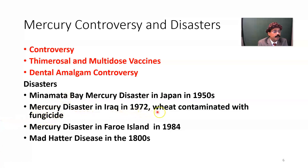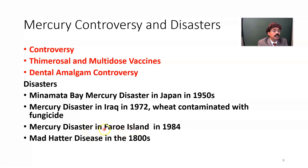Mercury disaster was also found in the Faroe Islands in the North Atlantic, where people used to eat whale meat and developed manifestations of mercury poisoning. The Mad Hatter disease, documented around 1980, involved neuropsychiatric problems in people who used to work in the hat-making industry in close quarters. They came in contact with mercury-containing fluid used during the process of making hats, and developed neuropsychiatric problems — that is Mad Hatter disease. People who wore those hats also had Mad Hatter disease.